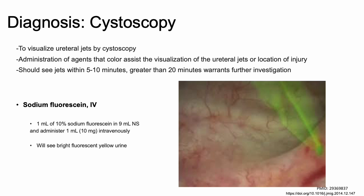The first agent we'll discuss is sodium fluorescein. The dose is 1 ml of 10% sodium fluorescein diluted in 9 ml of normal saline, and you administer 1 ml of this intravenously. You will see a bright fluorescent yellow urine, as shown in this photo.